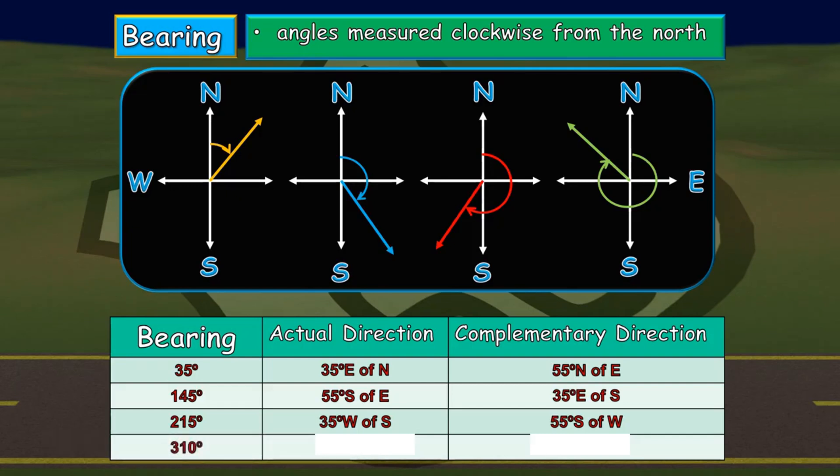And for the last, since it is more than 270 degrees and not yet exceeding 360 degrees, all we have to do is to subtract 310 by 270 degrees. 310 minus 270 degrees, we have 40 degrees. And the direction, since it is pointing towards the north, the arrowhead, it will be 40 degrees north of west. And for the complementary direction, we just subtract 40 with 90, so we have 50 degrees west of north.